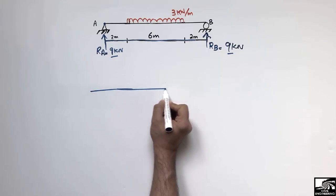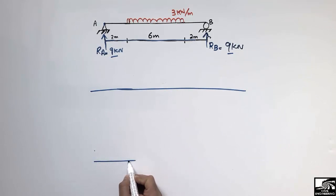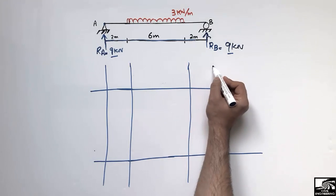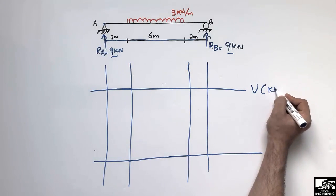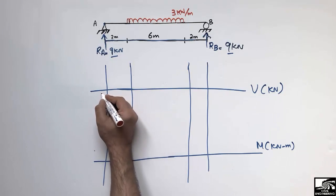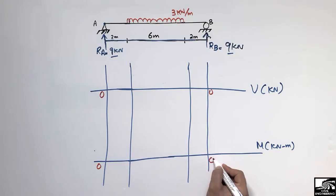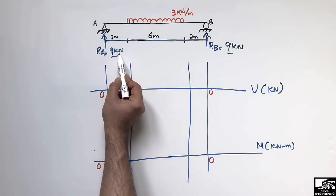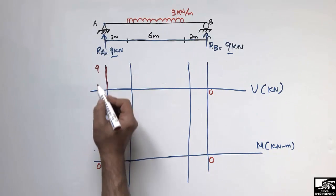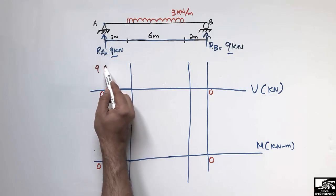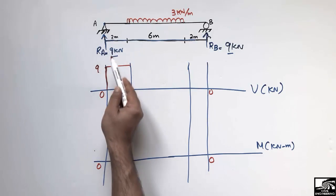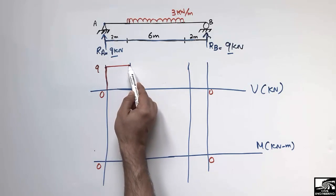We draw reference lines for the shear force diagram (in kN) and bending moment diagram (in kN·m). Starting with the shear force diagram at zero, RA = 9 kN acts upward, so we plot +9 kN. Over the 2-meter distance with no load, the shear force remains constant as a straight horizontal line. Then the uniformly distributed load begins.